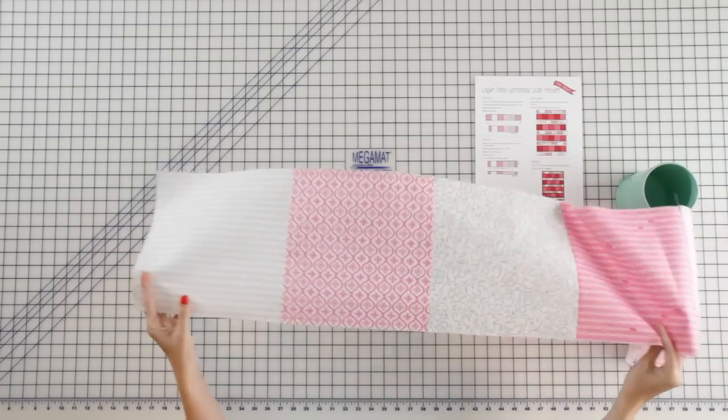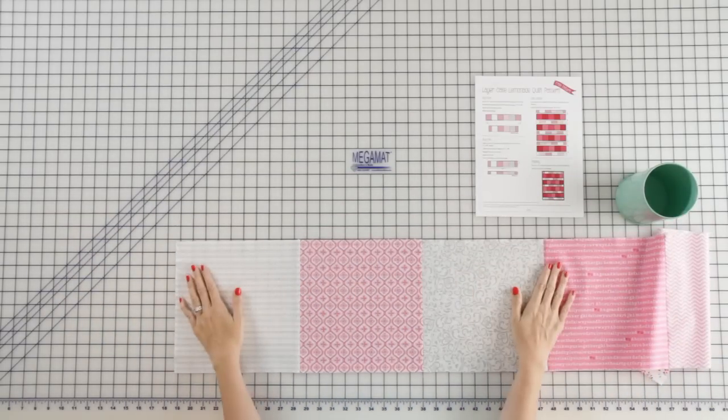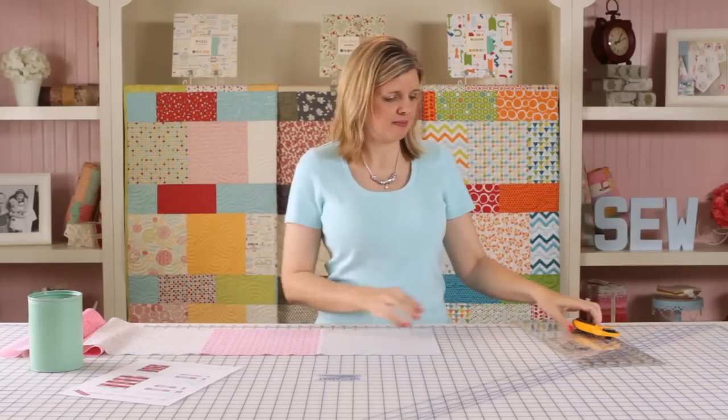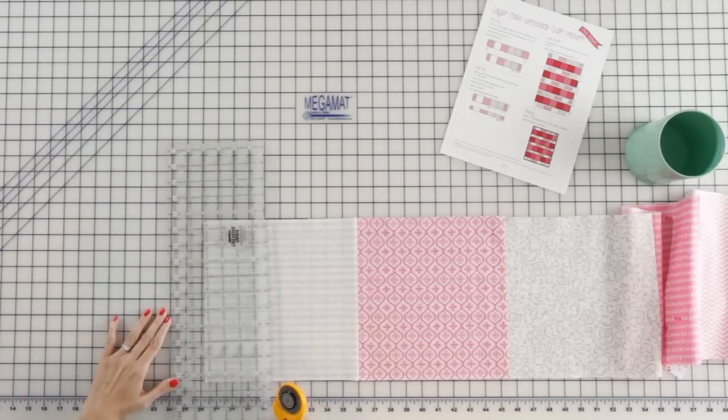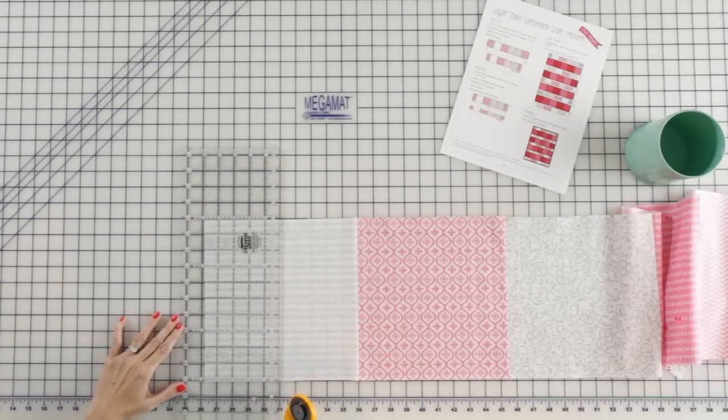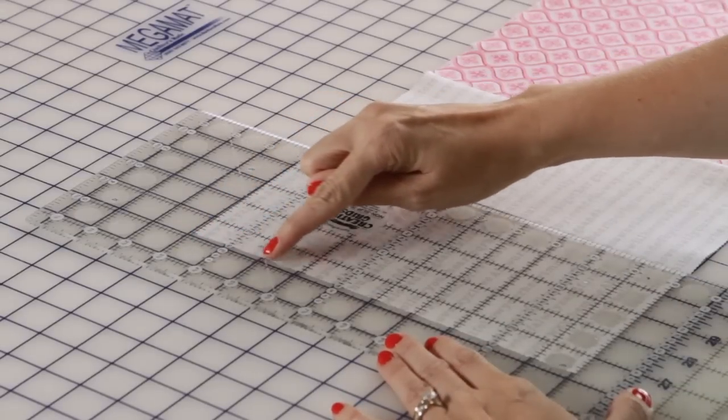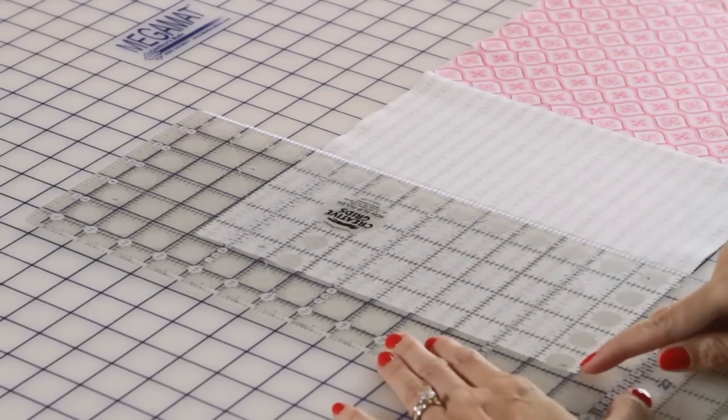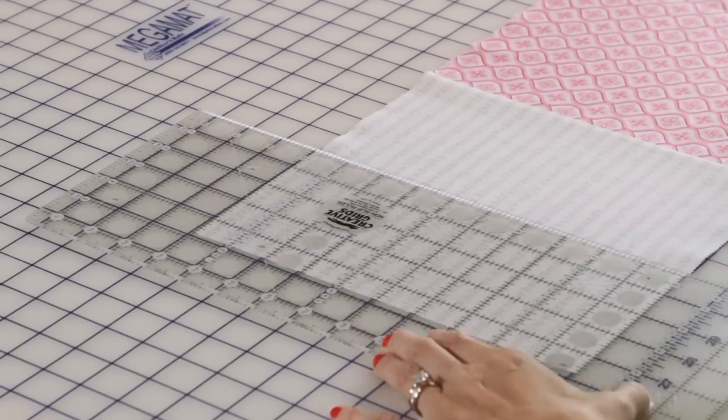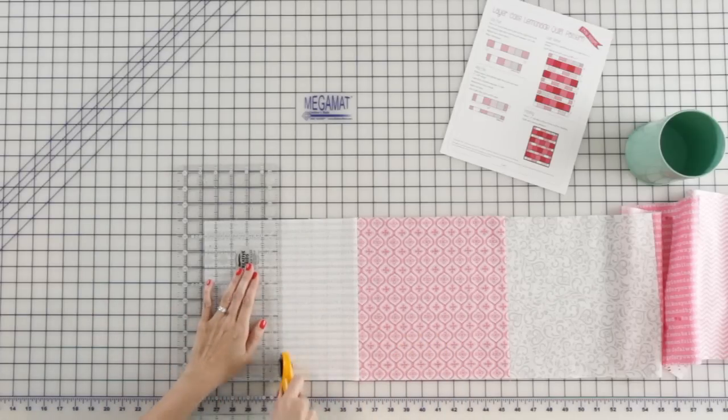And what we're going to do in this step is follow the pattern and we're going to trim down twice. We're going to trim four and three quarters inch off each short side. So I'm going to line up my ruler, the four and three quarter inch line, and also my bottom line to make sure it's straight and cut.